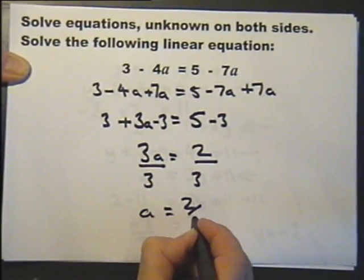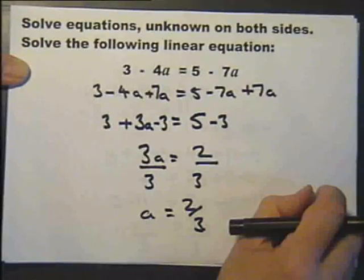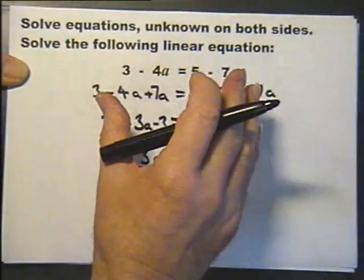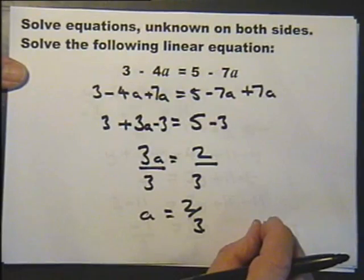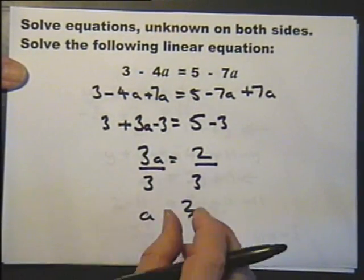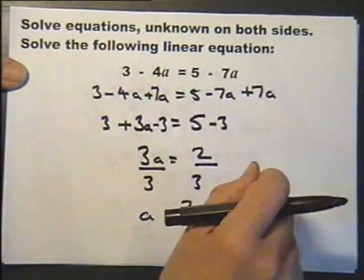So I think thinking ahead was worthwhile. Should I do that or should I do that? Which is the best approach? I could still end up with the right answer if I had done add 4a to both sides.